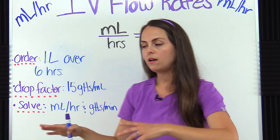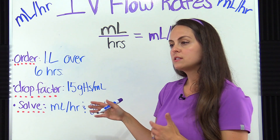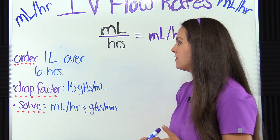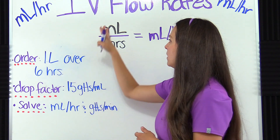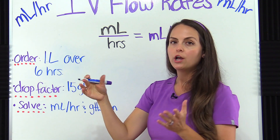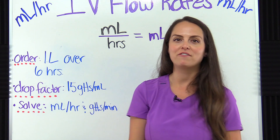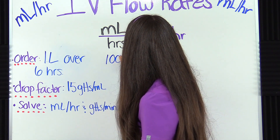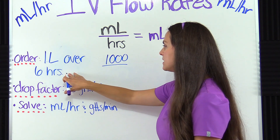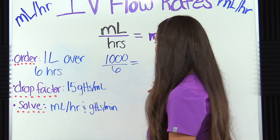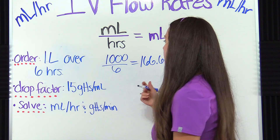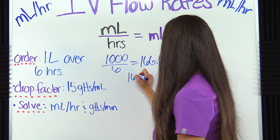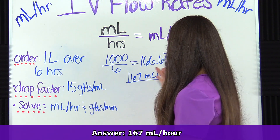I have a whole video where I go into detail about drop factors, so after you watch this, check that out for more practice. First, let's solve for the hourly rate. We have to give one liter, so we convert: one liter equals 1,000 milliliters, so put 1,000 on top. The physician wants it over six hours, so put six on the bottom. 1,000 divided by six gives us 166.66 repeating, which rounds to 167 milliliters per hour — that is our hourly rate.